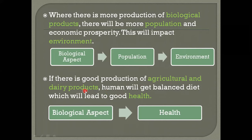If there is good production of agricultural and dairy products — which fall under the biological aspect — humans will get a balanced diet, which will lead to good health. So the relationship between biological aspect and health is that good biological production leads to better diet and better health.